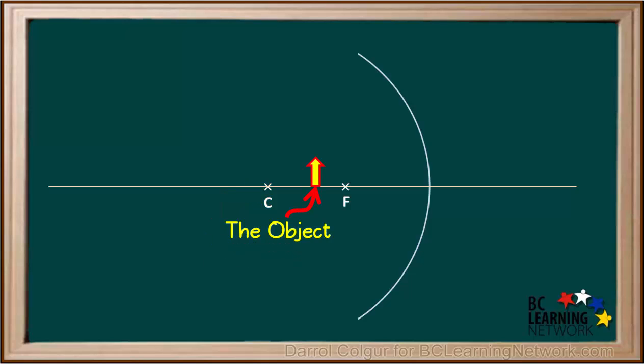In this case, the object, a yellow arrow, is between the center of curvature and the focal point. To predict where the image will be and what it will be like, we start by drawing a straight line from the top of the object to the mirror. This line must be parallel to the principal axis.